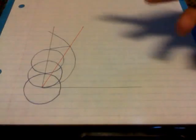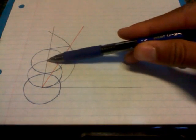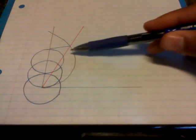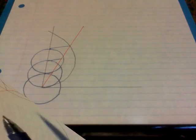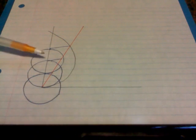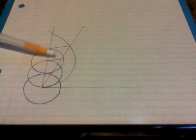We're going to repeat this process drawing two more parallel lines at the intersections of these circles. Three parallel lines that break up our first line into three equal parts.